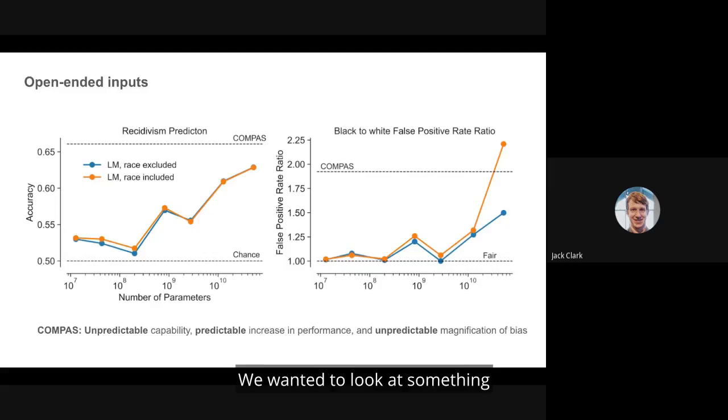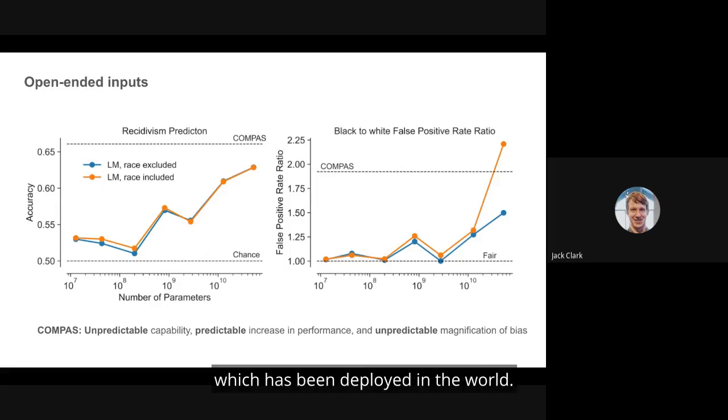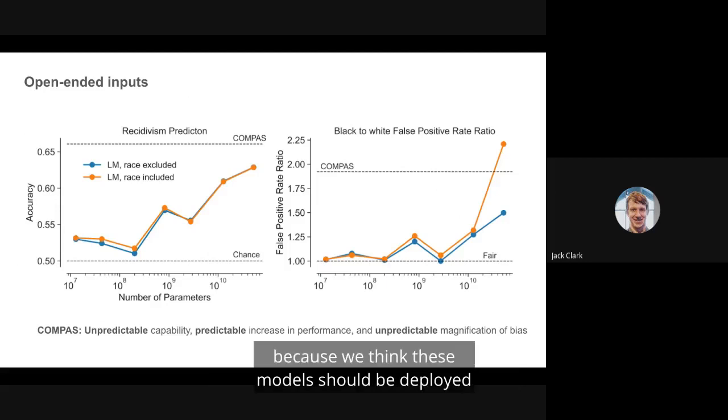So we did an experiment. We wanted to look at something that we hadn't tested our model on and which we would not expect people to use our model for. So here we looked at the task of bail recidivism prediction, and we compared the performance of our model against the COMPASS data set, a well-studied system which has been deployed in the world. We are not doing this because we think these models should be deployed for this purpose. In fact, we think the opposite. It would be very bad for them to. But we did it because, as developers, we know we can't predict all the ways people might use a model that we develop.